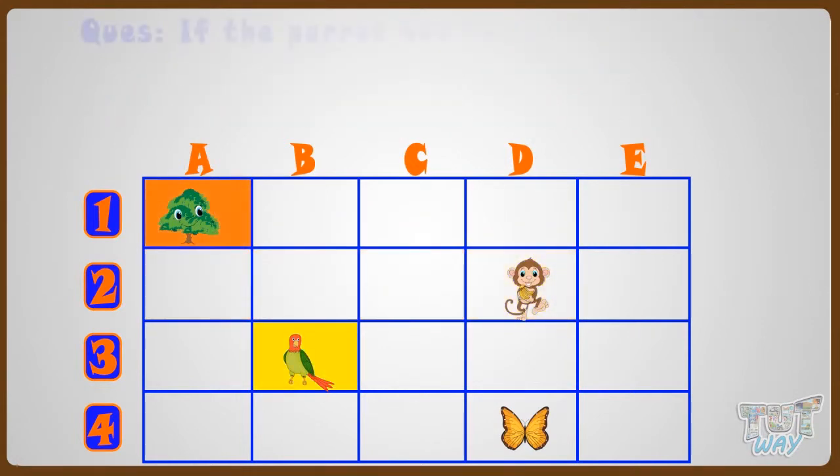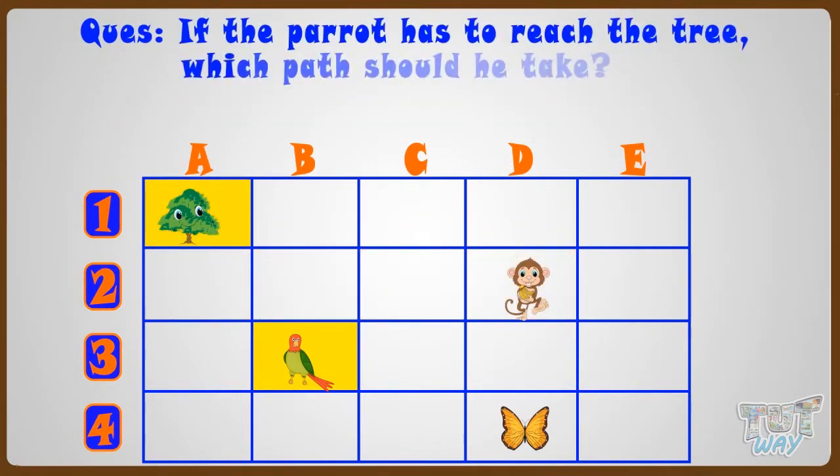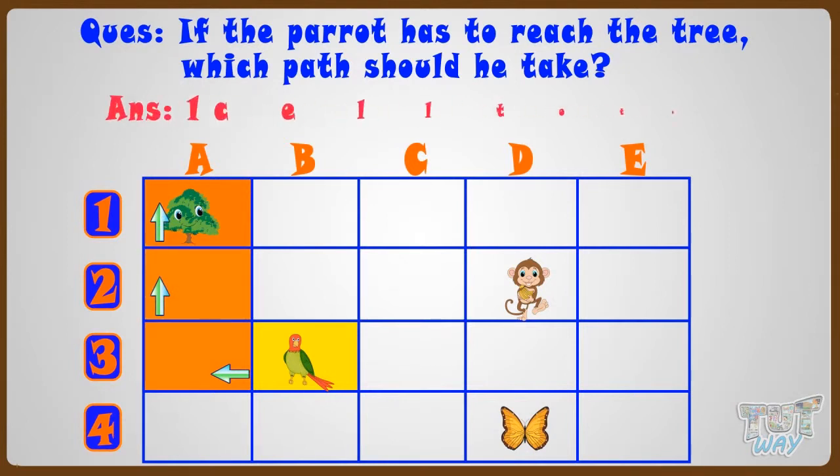Now let's find if the parrot has to reach the tree. Which path should he take? 1 cell to the right and then 2 cells up. So its path should be 1 cell to the right and 2 cells up.